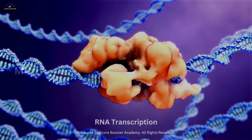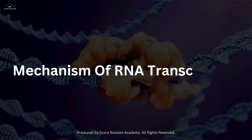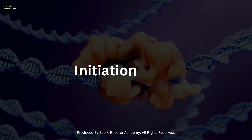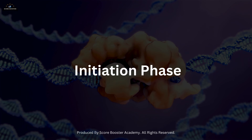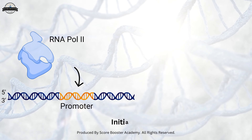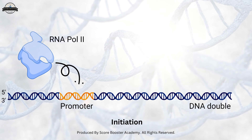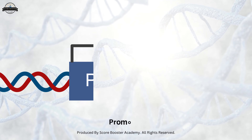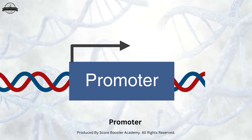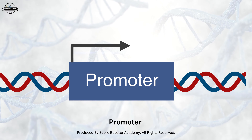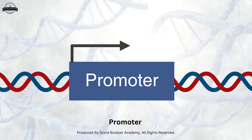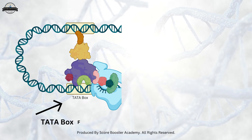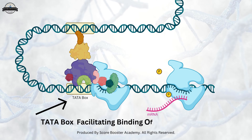Now let's learn about the mechanism of RNA transcription. RNA transcription begins with the initiation phase. During this stage, RNA polymerase binds to a specific region of the DNA known as the promoter. The promoter is a sequence of DNA that signals the start of a gene. It contains specific motifs, such as the TATA box in eukaryotes, which facilitate the binding of RNA polymerase and other transcription factors.